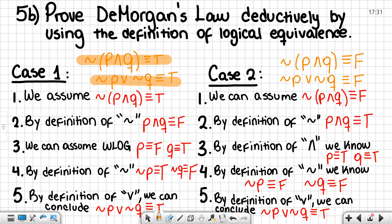We will create case number one, in which we assume that the negation of p and q is logically equivalent to true. By definition of negation, p and q must be false. By our logic, we can assume that p is logically equivalent to false and q is logically equivalent to true. By definition of negation, the negation of p is logically equivalent to true and the negation of q is logically equivalent to false. Lastly, by definition of or, we can conclude that the negation of p or the negation of q is logically equivalent to true.